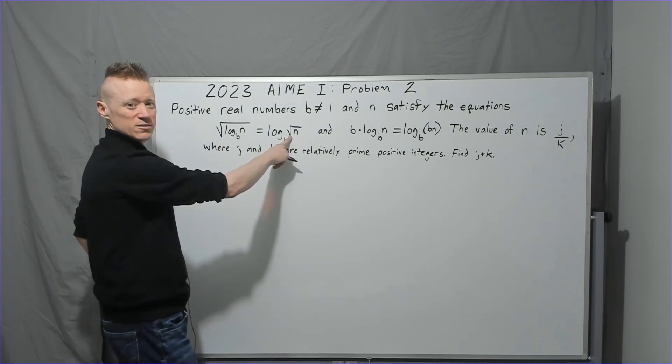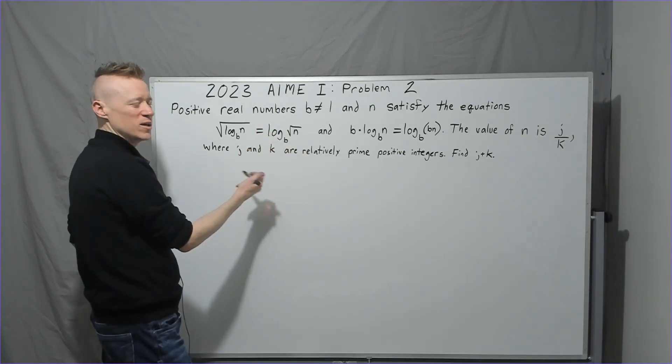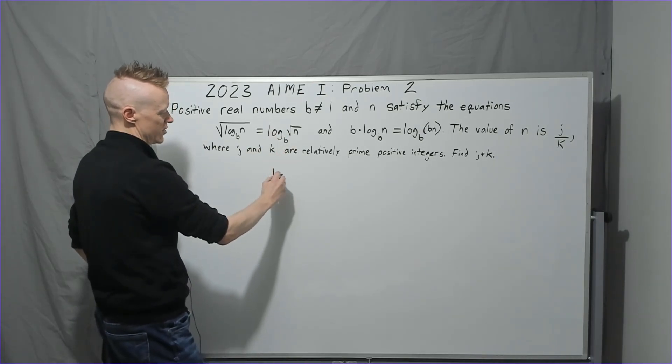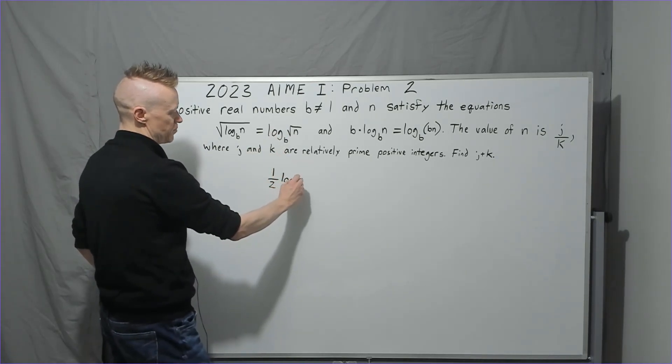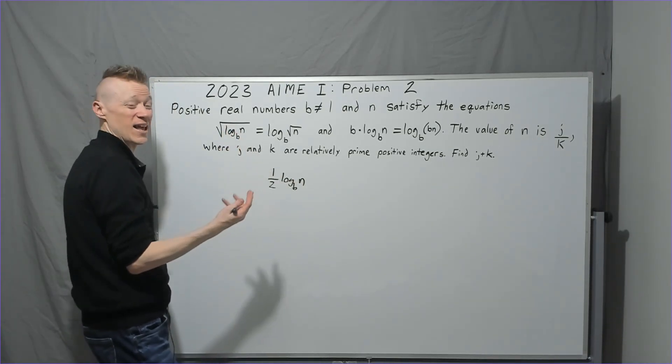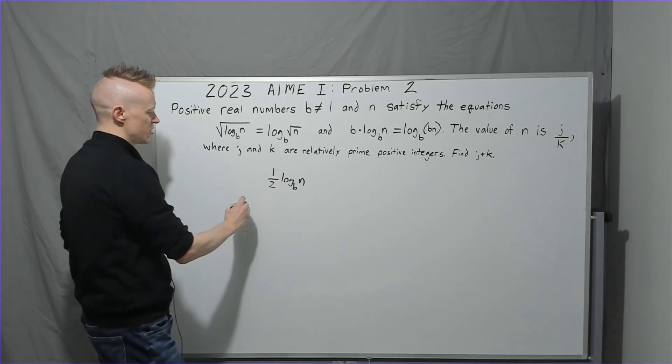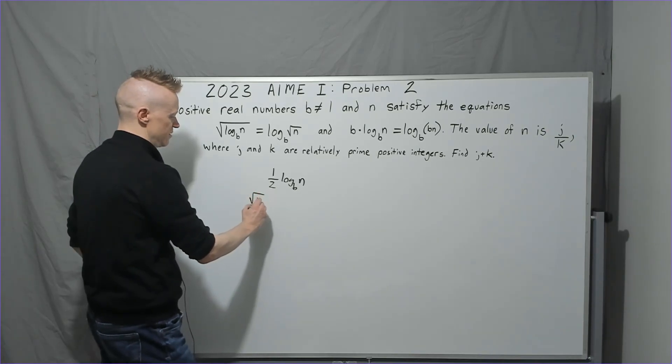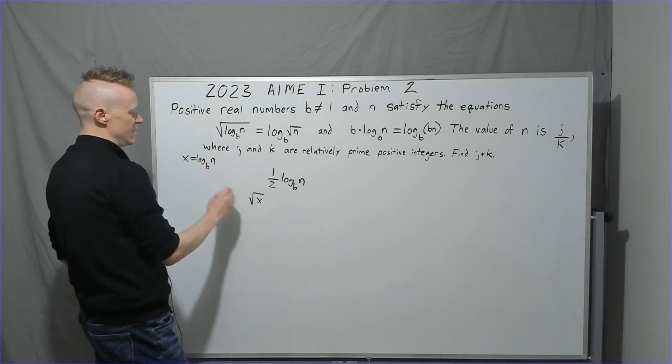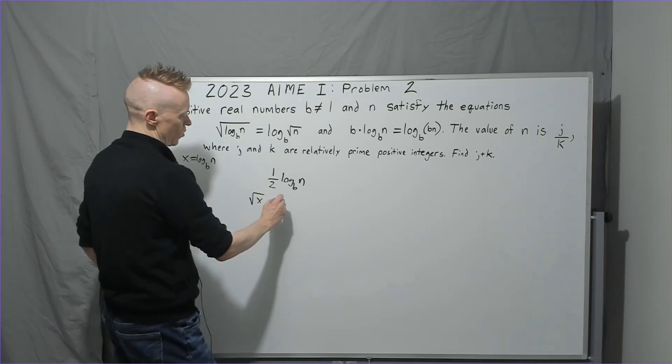And the idea is, first off, I would start with this square root. Square root is half power. Half power comes in front. Once you see that this half power is going to come in front, you're going to have one half times log base b of n. Right away, this and this are the same. Do we want to write all of that? Use a placeholder. What's the standard placeholder? X. So you're going to have square root of x, which is what this is, x equaling log base b of n. And you're going to have square root of x equals one half x.